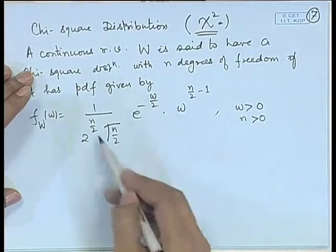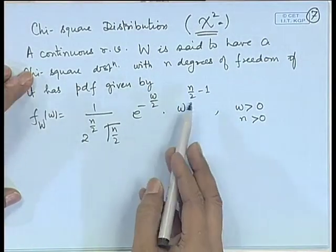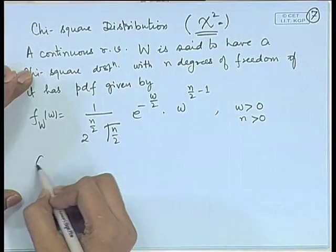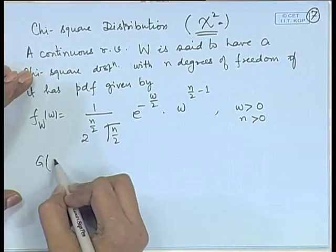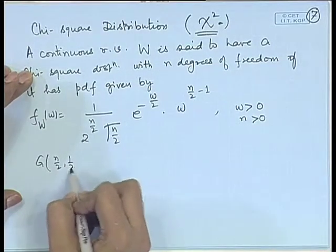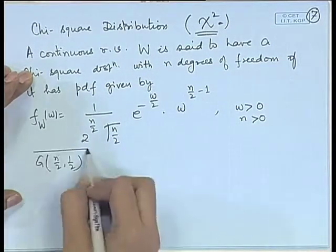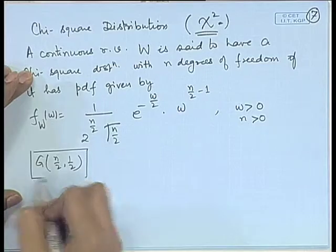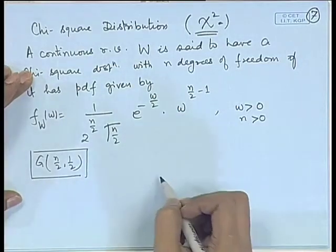If we see carefully, it is actually nothing but a gamma distribution with parameters n/2 and 1/2. So this is only a special case of gamma distribution.